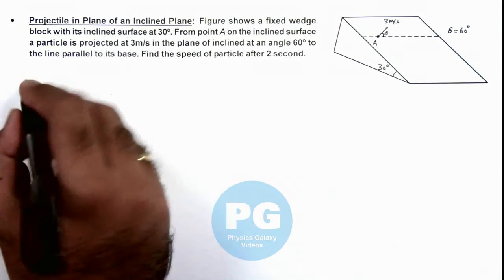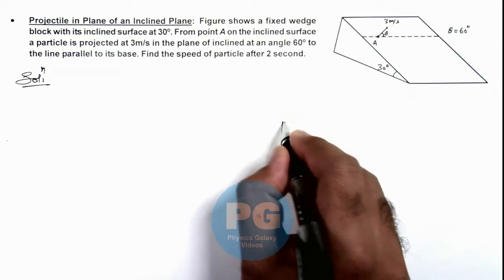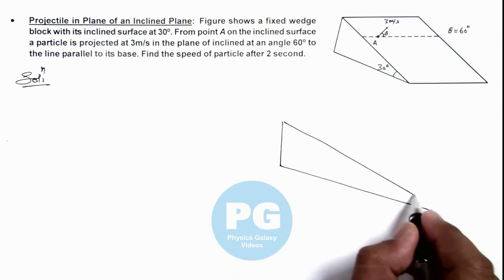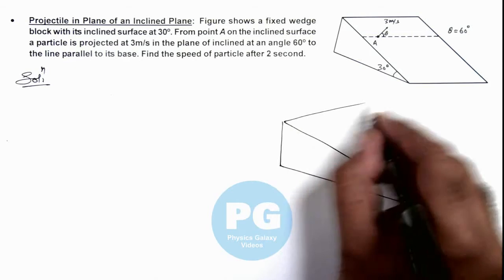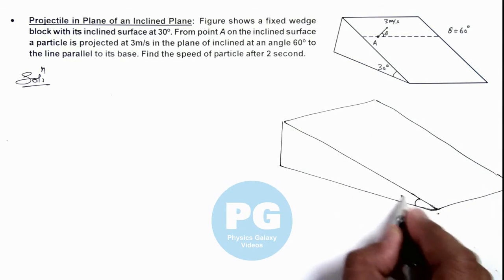Here we can analyze this situation in detail. I redraw the figure to understand it better. If this is the inclined plane and this angle is 30 degrees.